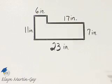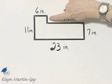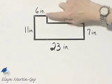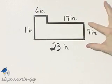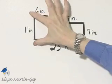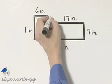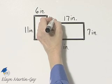And then let's find one more length of this segment. How can we find the length of this segment? This is 11 inches, this is 7 inches. 11 minus 7 leaves 4 inches.